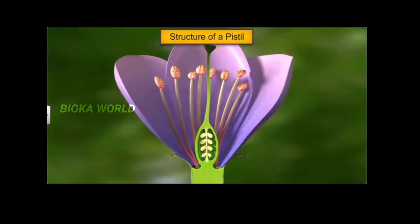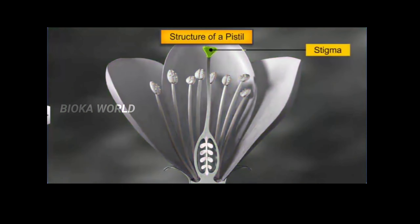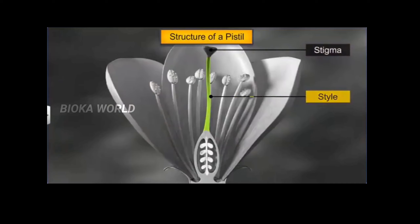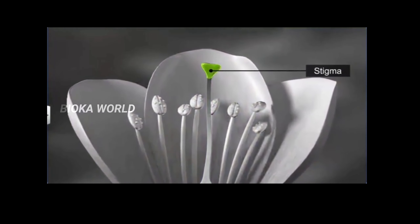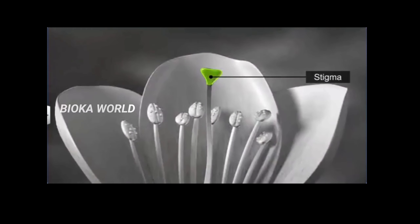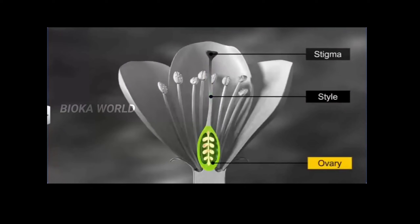If you observe the structure of the pistil, you will find that it consists of the stigma at the tip, followed by the style in the middle and the ovary at the base. While the stigma is the landing platform for the pollen grains, the style, an elongated slender structure, connects the stigma to the ovary, the basal bulging part of the pistil.